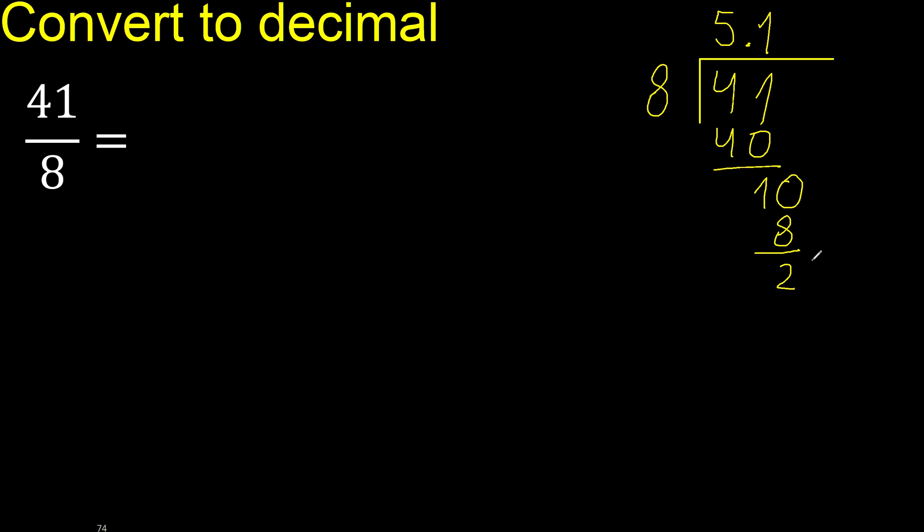Next, there is not number, therefore complete, always complete with 0. Point, point is here. 20. 8 multiplied by 3 is greater, multiply by 2, 16. Subtract.